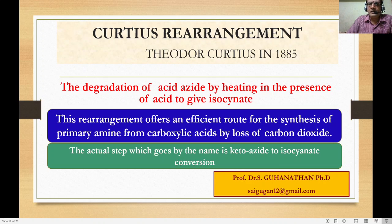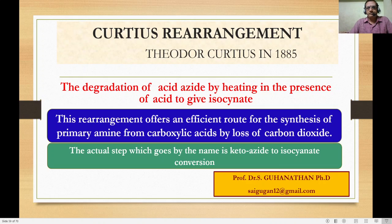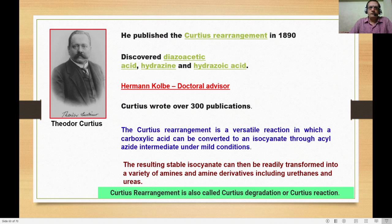These are the applications. The rearrangement offers an efficient route for the synthesis of primary amine from carboxylic acid by the loss of carbon dioxide. I will explain during the reaction how the preparation of primary amine can be offered by the Curtius rearrangement reaction, which is otherwise called Curtius degradation or Curtius reaction.